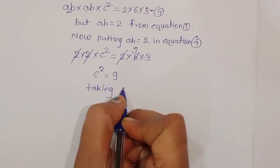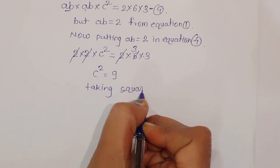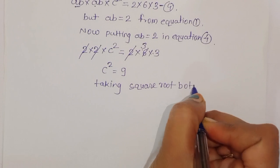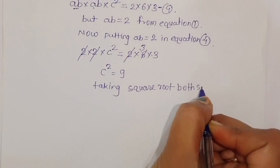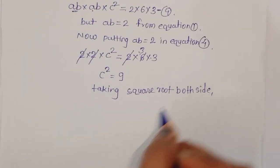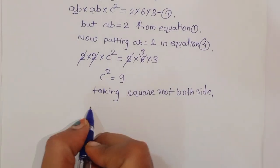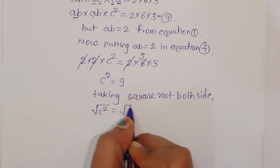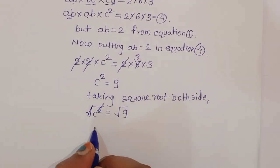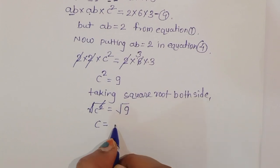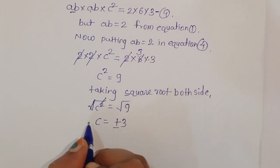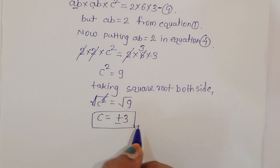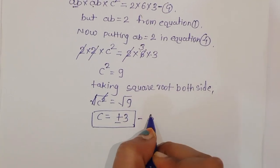Taking the square root of both sides: C squared equals the square root of 9. The square root cancels and C is equal to plus or minus 3. This is the value of C.